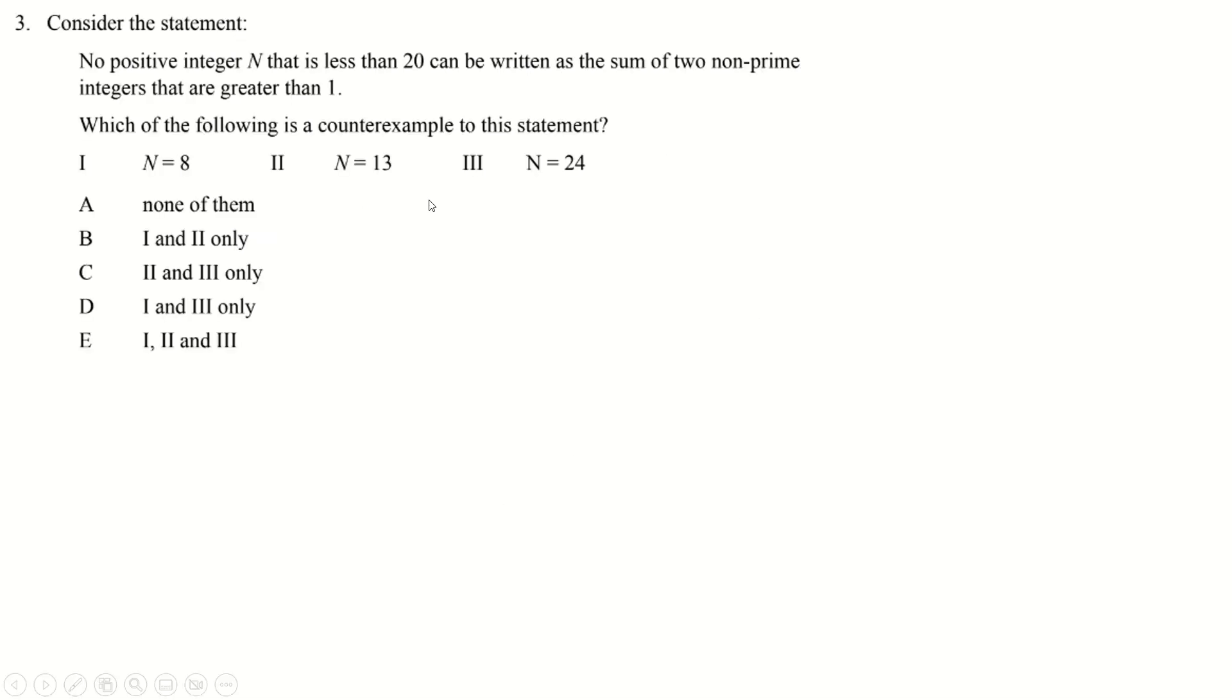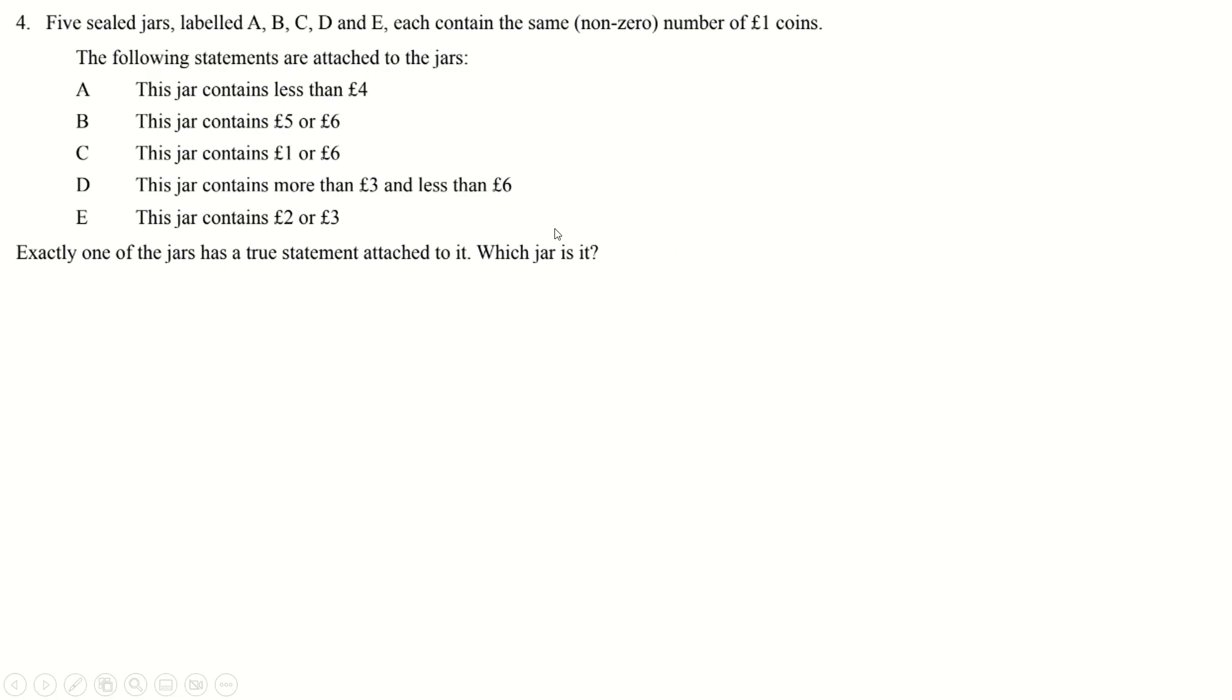Question three. Positive integer n that is less than 20. So we'll immediately discount this one because that's not less than 20. No positive integer n that is less than 20 can be written as the sum of two non-prime integers greater than one. n is eight, or eight is four plus four. So those are two non-prime integers greater than one. And 13 is four plus nine. So those two are counterexamples because they can be written as the sum of two non-primes greater than one.